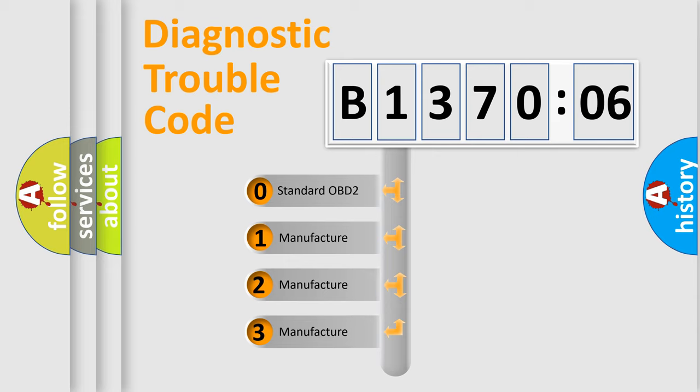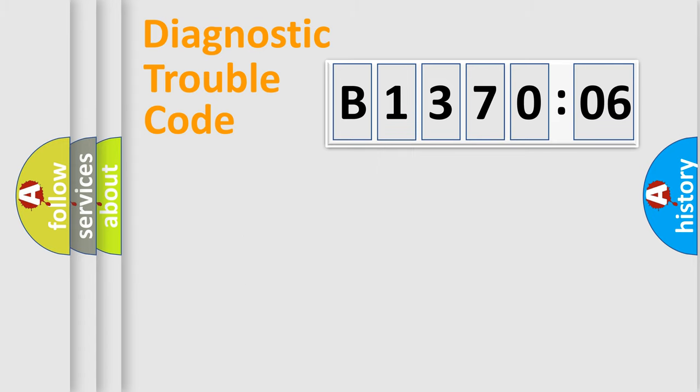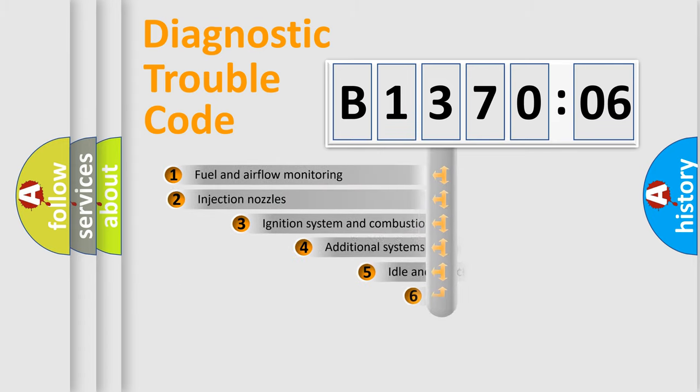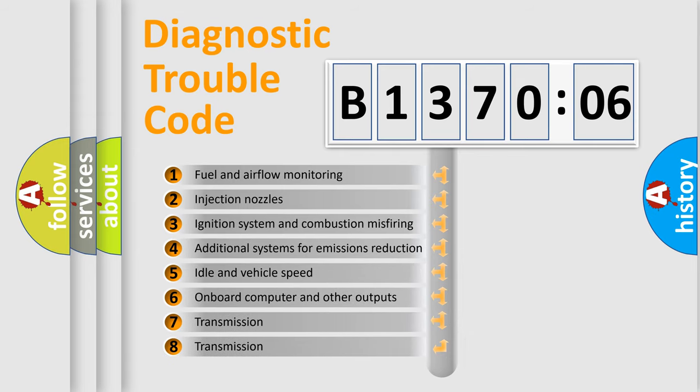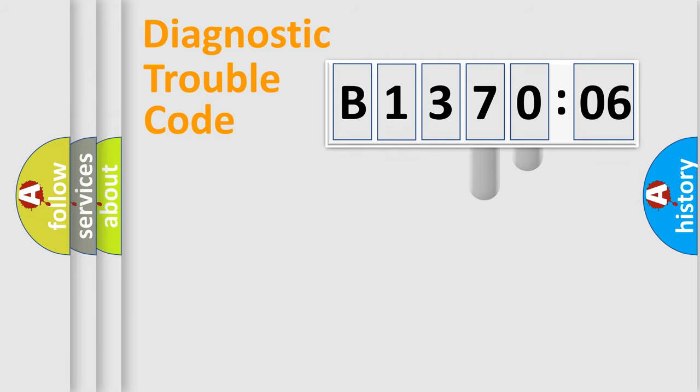If the second character is expressed as zero, it is a standardized error. In the case of numbers 1, 2, or 3, it is a more prestigious expression of the car-specific error. The third character specifies a subset of errors. The distribution shown is valid only for the standardized DTC code. Only the last two characters define the specific fault of the group.